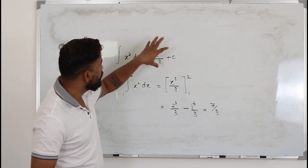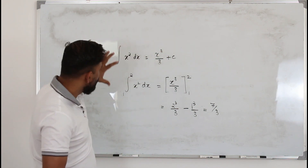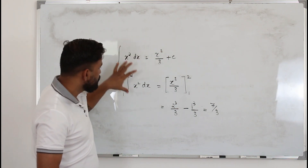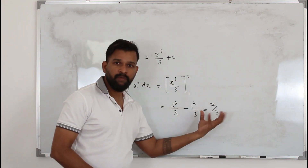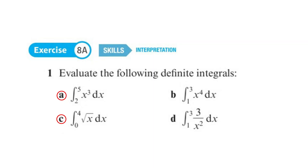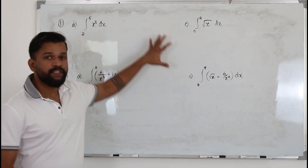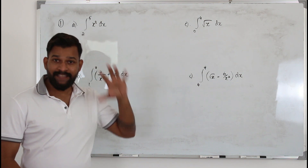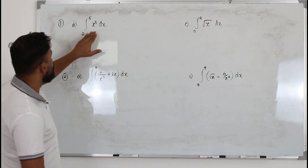When you integrate, you get a function. But when you apply the limits in a definite integral, you will get some real number. I have taken all these questions from exercise 8a, so I'm going to solve them one by one.